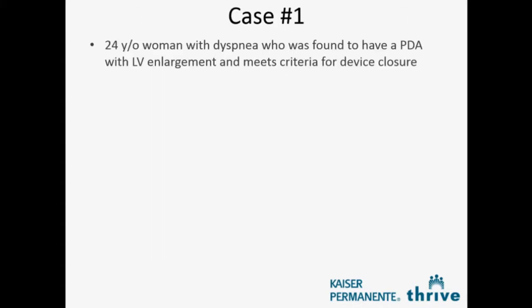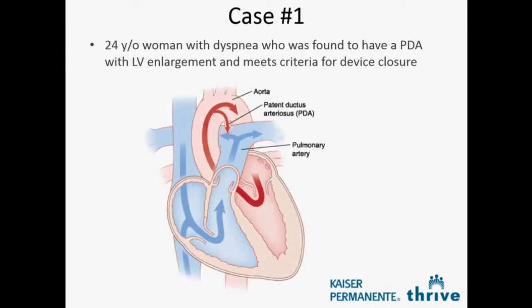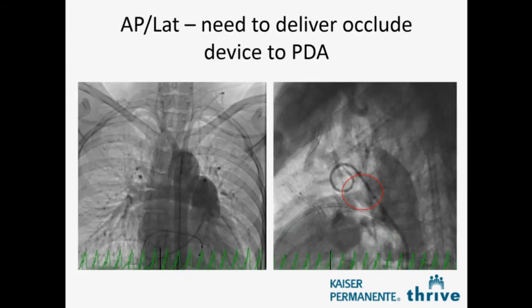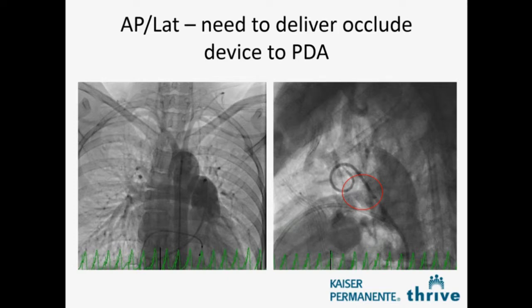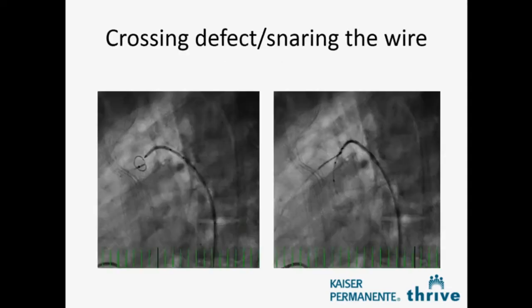A few cases to demonstrate the technique. This is a 24-year-old woman with a patent ductus arteriosus who meets criteria for intervention. On the left is an AP view and on the right a lateral view. We like to pick the AP view where the pigtail catheter folds over itself, then pick the orthogonal view 90 degrees from that. On the screen on the right you get a sense for this communication. Depending on your training, you might cross from the aortic side or the pulmonary artery side, and you also have to decide whether to deliver the device from the aortic or venous side — all things to think about ahead of time.